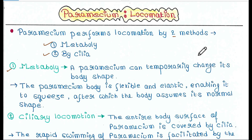What is metaboly? A paramecium can temporarily change its body shape because the cell itself has a flexible pellicle surface. That's why it can change the body shape. Metaboly is basically the change of body shape, which it can do by changing its cell structure. The paramecium body is flexible and elastic, which enables it to squeeze, after which the body assumes its normal shape.